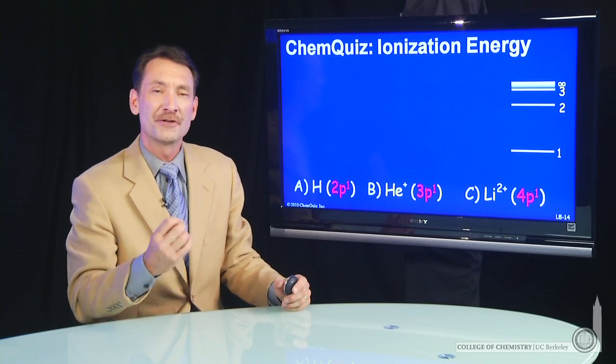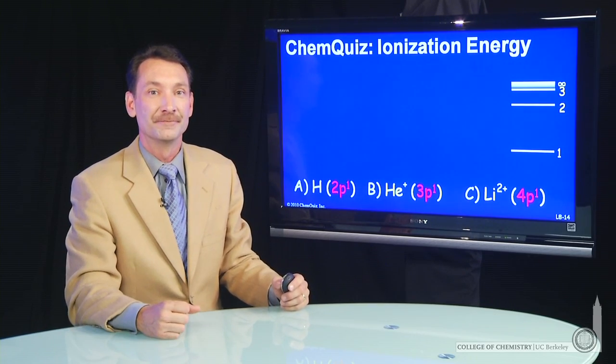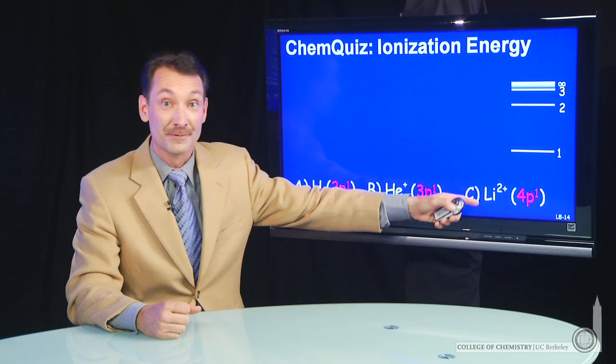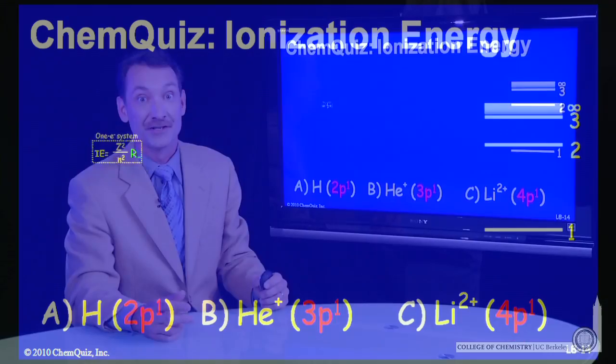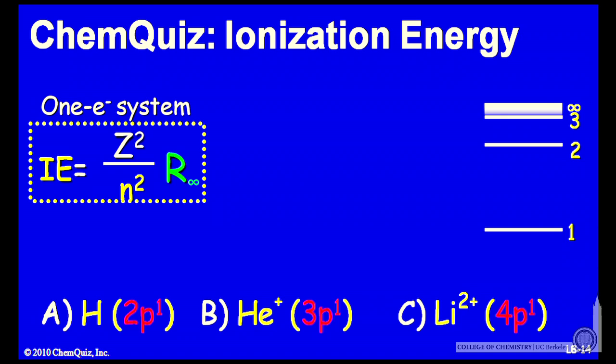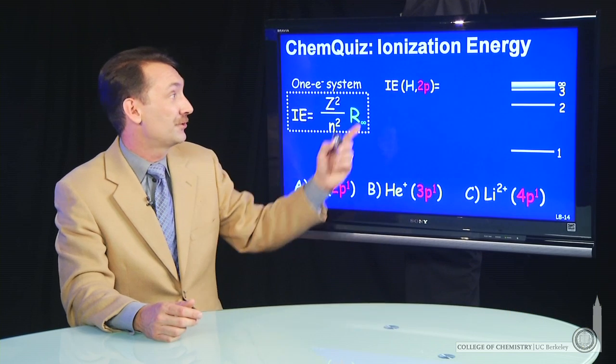We're talking about three species, and we're trying to determine the ionization energy. Well, for one-electron systems, each of these is a one-electron system, we can actually calculate the ionization energy. It's just z squared over n squared times the Rydberg constant. So let's just do that.